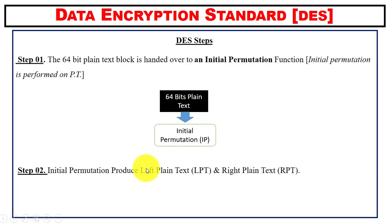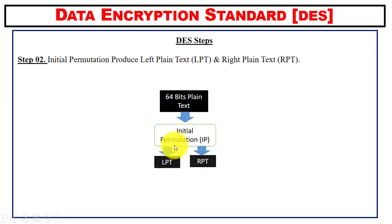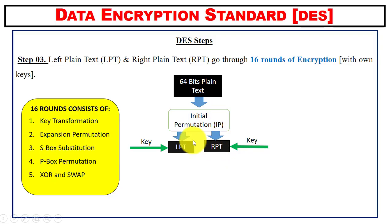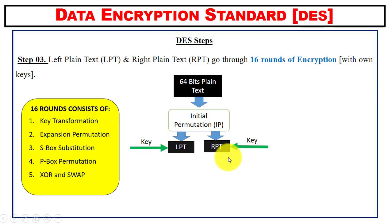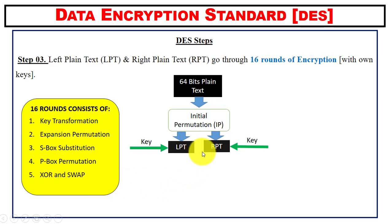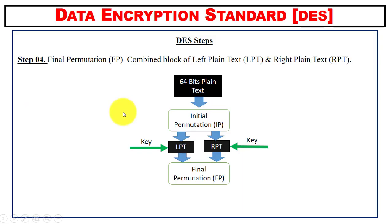After initial permutation, it produces left and right plain text. Both left and right plain text then go through 16 rounds of encryption, each with their own keys. Each of the 16 steps involves key transformation, expansion permutation, S-box substitution, P-box permutation, and then XOR and swap operations performed on the left and right plain text.